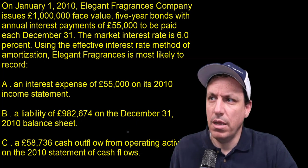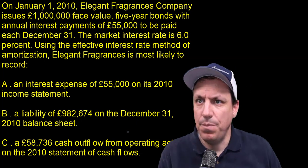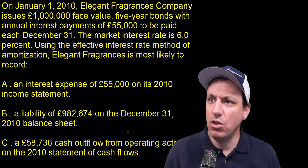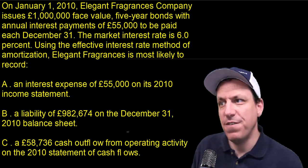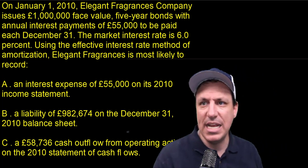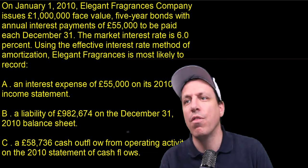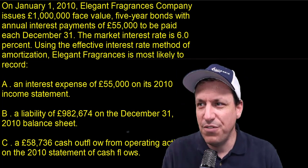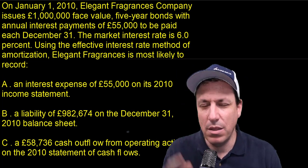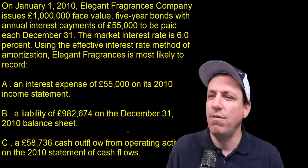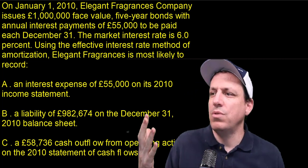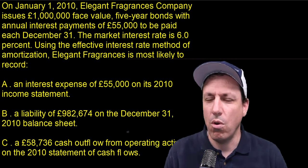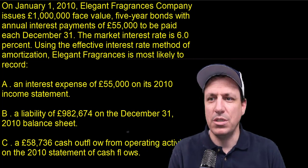On January 1st, Elegant Fragrances Company issues $1 million face value, five-year bonds with an annual interest payment of $55,000 to be paid each December 31st. The market interest rate is 6%. Using the effective interest rate method of amortization, what would Elegant Fragrances most likely record? There are three different options.